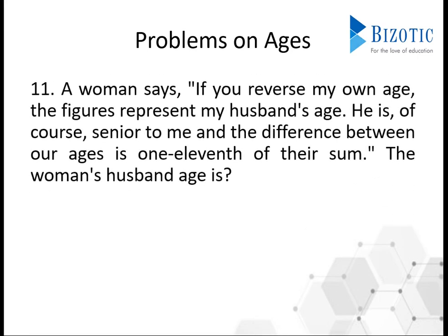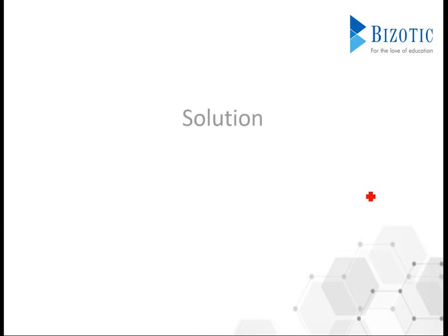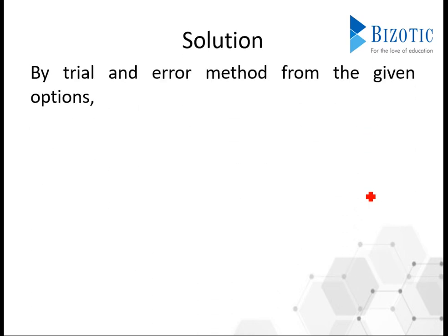A woman says: if you reverse my own age, the figures represent my husband's age. He is of course senior to me, and the difference between our ages is 1/11th of their sum. What is the woman's husband's age? There are four options. Surprisingly, no numerical age is given in the question, so these kinds of questions can be solved by trial and error, also called the option elimination method.